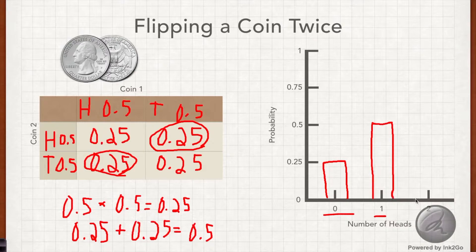And finally, how could I get two heads? The only way that could happen is if both coins come up heads, so that probability is 0.25.